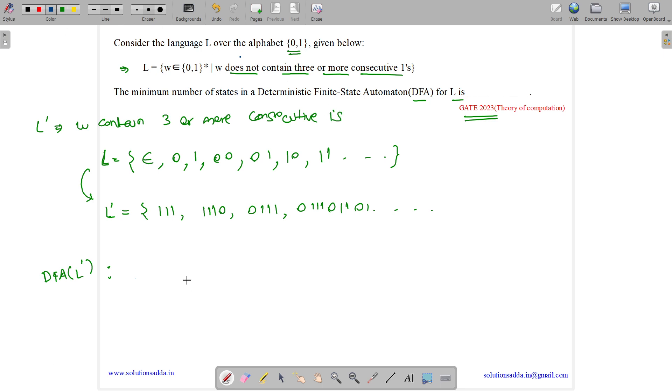Let's draw the DFA. First, we'll draw for 3 consecutive ones. After 3 ones, we reach the final state, and after that, whatever happens, we remain in that state. Let's name the states as A, B, C, and D.